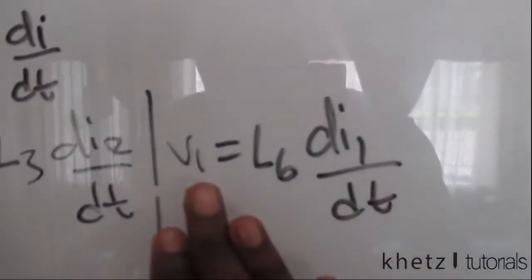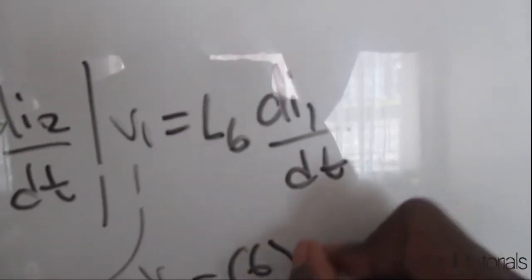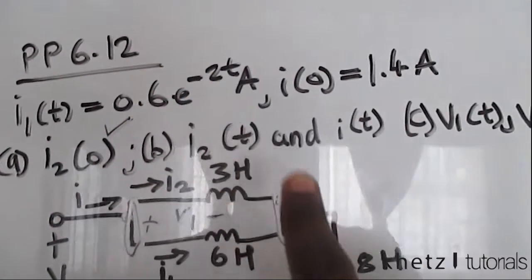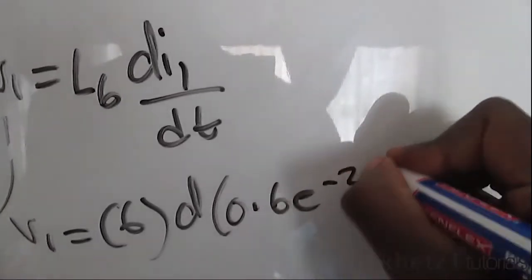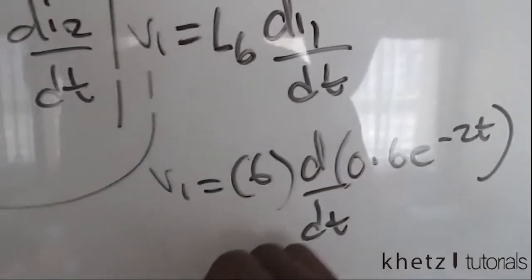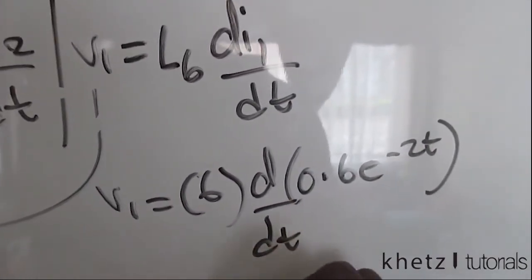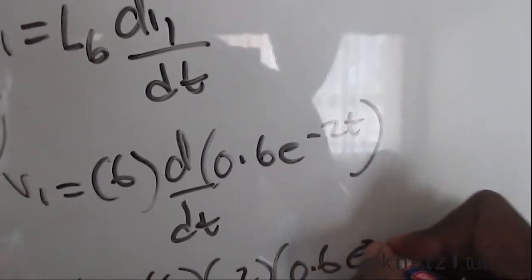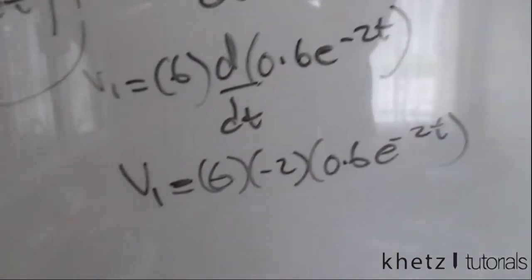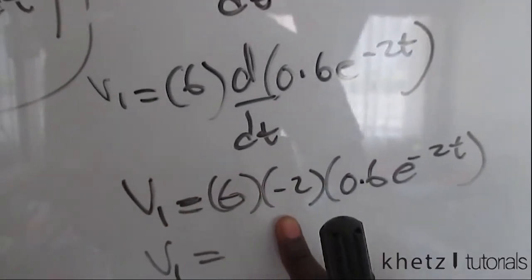To find v1 quickly: v1 = 6 · d/dt of i1, and i1 is given as 0.6e^(-2t). So v1 = 6 multiplied by the derivative of 0.6e^(-2t). Differentiating gives v1 = 6 × (-2) × 0.6 × e^(-2t), which equals -12 × 0.6 × e^(-2t).